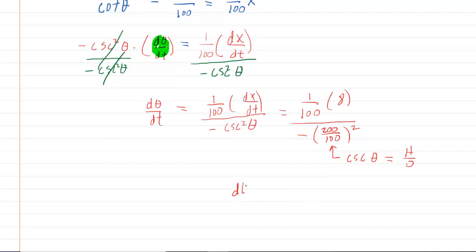We can just fill in 200 over 100, and then we simplify this down. We're going to have on top eight one hundredths over negative 200 divided by 100 is 2, and 2 squared is 4. When we crunch this down, perhaps on our calculator, we would get negative 0.02. As far as the unit is concerned, theta is an angle, so it would be measured in radians. Time in this problem was measured in seconds, so we would have radians per second as our unit.